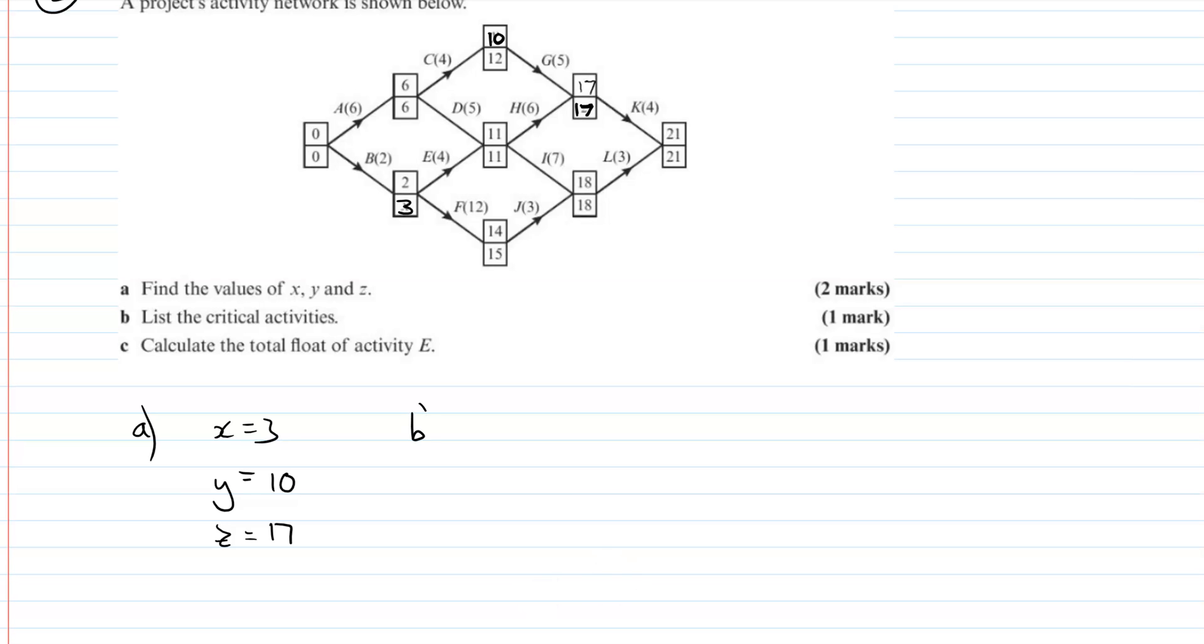So then we can list our critical activities. So remember our critical activities, you want to either pick ones that have zero float, or where these numbers are the same and that duration is the difference between them. That's a critical activity. So critical activities. If you want, you can pause the video and have a go at this first and check you've got it right. So critical activity. So A will be critical. B is not critical because of that 3. 3 minus 2 minus 1 is 1. It's got a float of 1. C also not critical. This box here at the end shows that it's not critical. 12 minus 4 minus 6 gives us 2, so it has float.